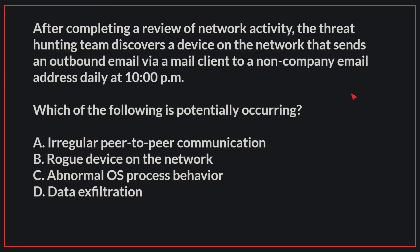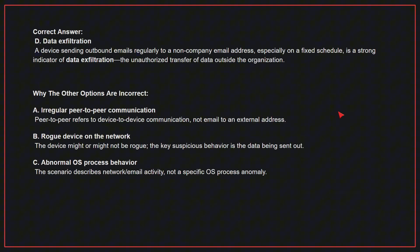After completing a review of network activity, the threat hunting team discovers a device on the network that sends an outbound email via a mail client to a non-company email address daily at 10 PM. Which of the following is potentially occurring? The correct answer is D: data exfiltration. A device sending outbound emails regularly to a non-company email address, especially on a fixed schedule, is a strong indicator of data exfiltration — the unauthorized transfer of data outside the organization.